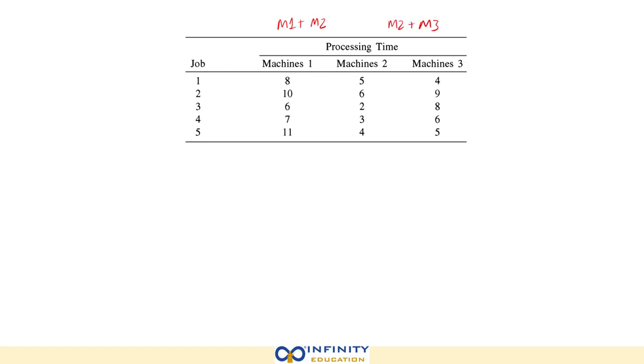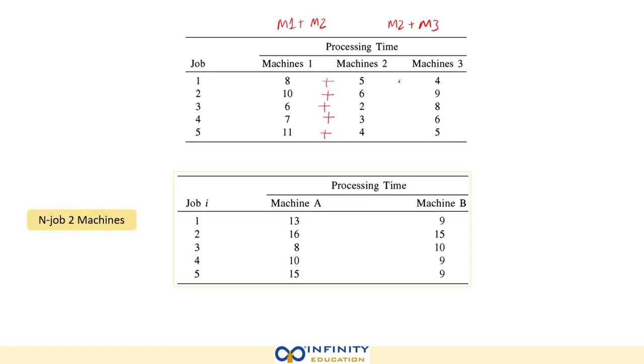So we'll be summing up like 8 plus 5, 10 plus 6, 6 plus 2, 7 plus 3, 11 plus 4. Same goes for this side also. So what we will get is n jobs, 2 machines problem.